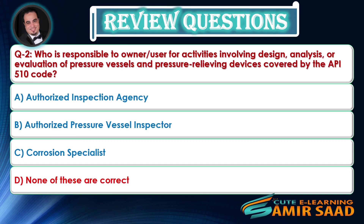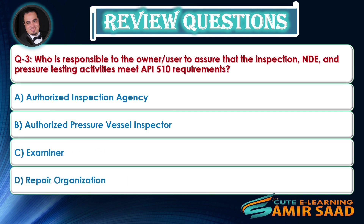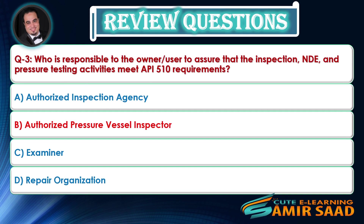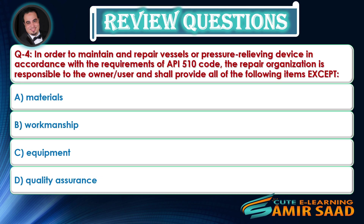Answer is D. Question number three: Who is responsible to the owner-user to assure that the inspection, NDE, and pressure-testing activities meet API 510 requirements? Answer is B. Question number four: In order to maintain and repair vessels or pressure-relieving devices in accordance with the requirements of API 510 code, the repair organization is responsible to the owner-user and shall provide all of the following items except — Answer is D.